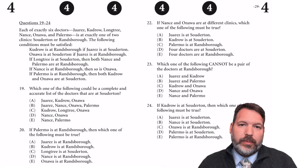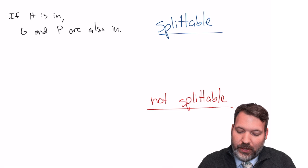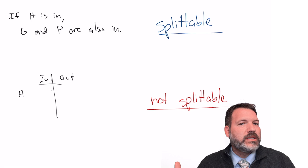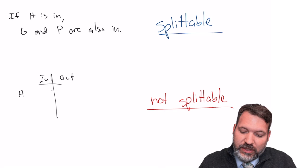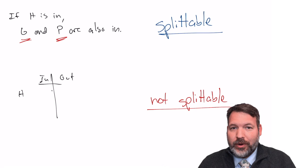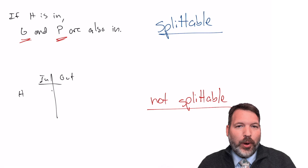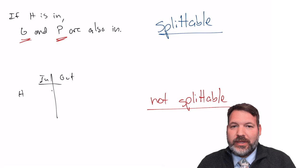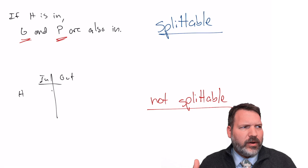Sometimes we want to split conditional statements. Take a simple example: 'if H is in, G and P are also in.' In a typical in-and-out diagram, when a question tells us H is in, this clue activates. We need to decide: is there something G and P have to do with each other — do we have to think about them together — or is their appearance in the same clue basically a coincidence?